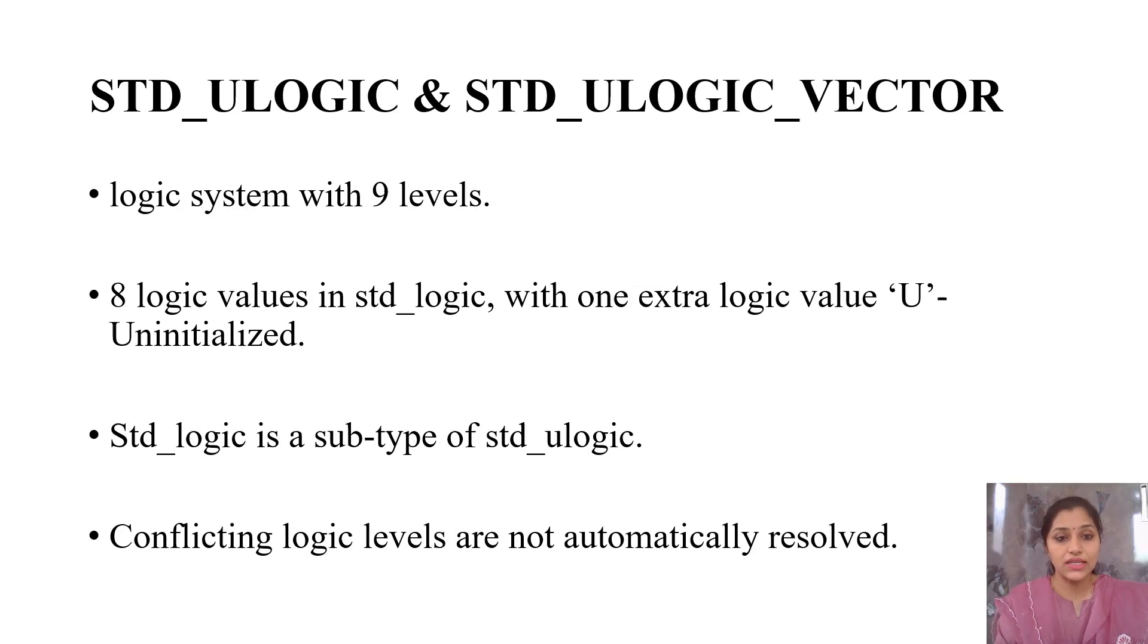Standard U logic has 9 total value levels. Eight levels are similar to standard logic. The extra logical level is U (uninitialized). The basic difference is that conflicting logic levels are not automatically resolved in U logic—it's unresolved logic. Standard logic is resolved logic. If two levels are applied simultaneously to a single node, standard logic resolves automatically, whereas U logic does not.